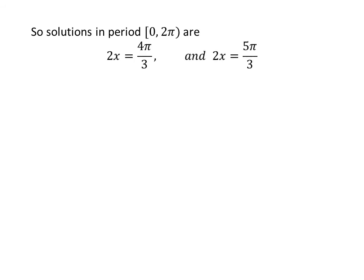So the solutions for 2x in the interval 0 to 2 times pi are 4 times pi upon 3 and 5 times pi upon 3.